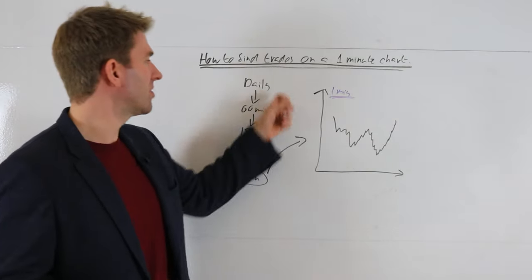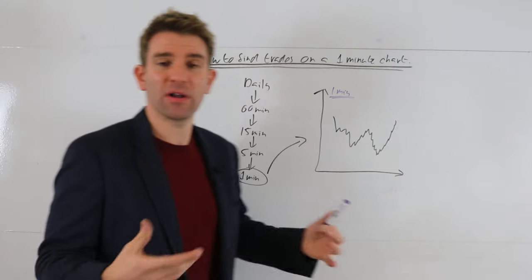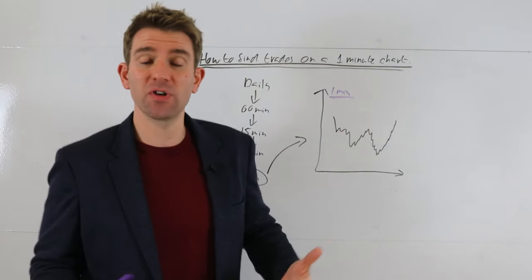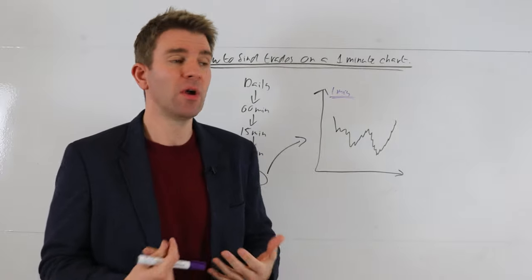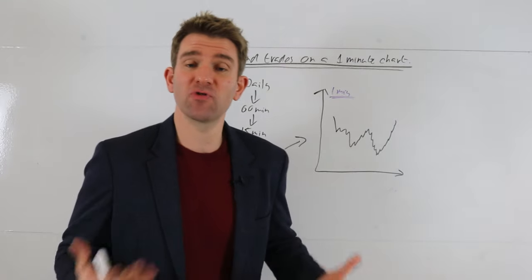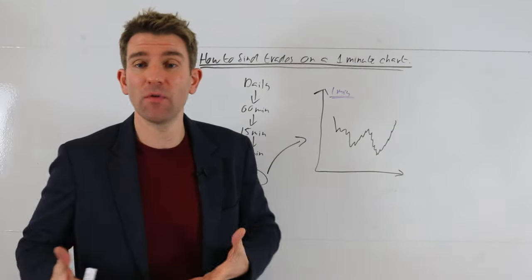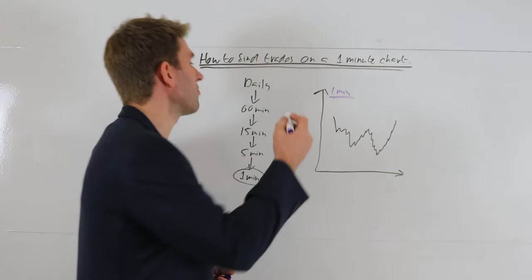So first of all we need to look at the bigger picture and we're starting to work our way down. So the bigger picture we look at on our daily. Let's say for example we look on our daily and we have an uptrend, so clearly the buyers are in control. We don't see any evidence perhaps of the trend ending - we never know, but we don't see any obvious evidence. So we kind of go right, we're in an uptrend on the daily.